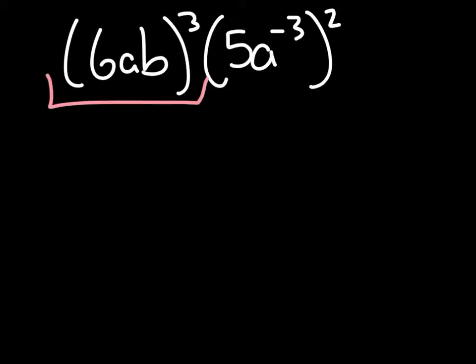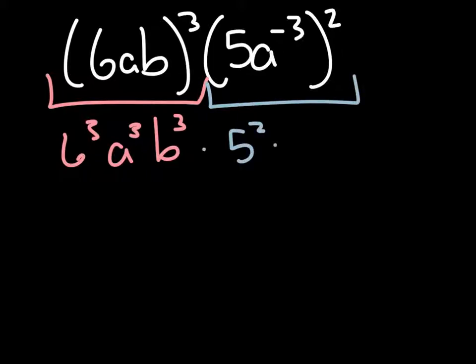So the first part of this, we have to apply the cube to all pieces. So 6 cubed times a cubed times b cubed. And the second part, we have times 5 squared times a to the negative 6.